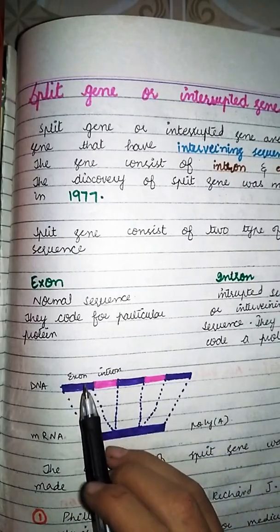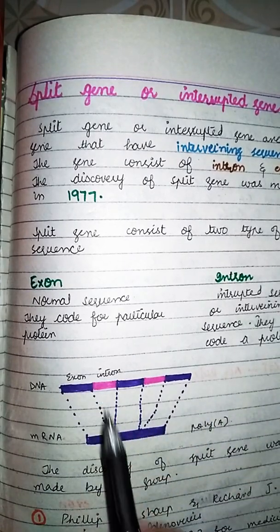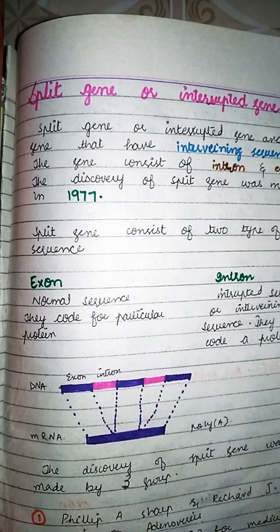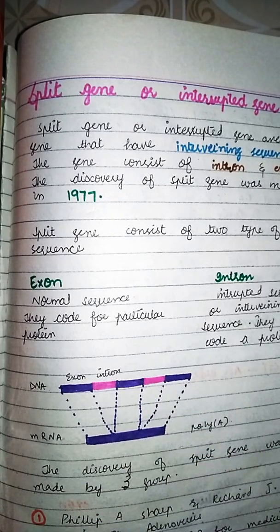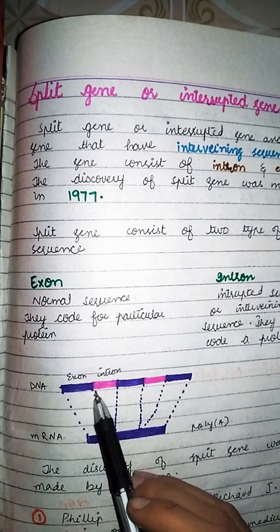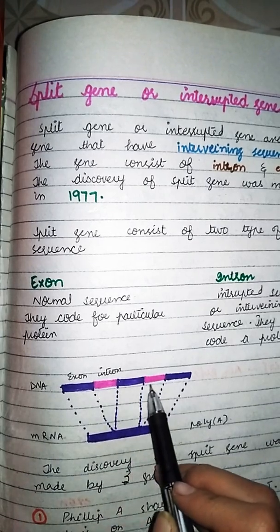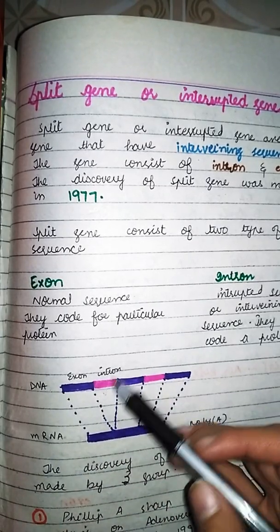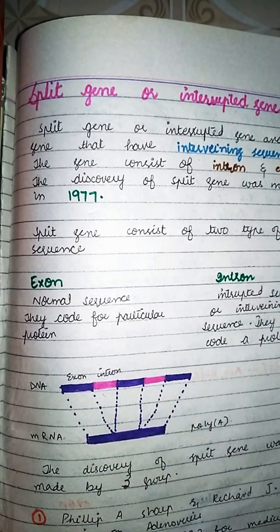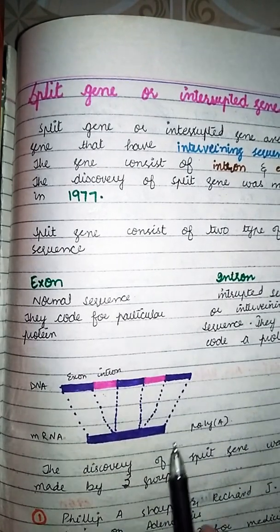اب diagram دیکھ لیں — یہ DNA ہے جس میں exon اور intron present ہیں۔ جب messenger RNA کی formation ہوتی ہے تو splicing کا process ہوتا ہے جس میں intron کو remove کر دیا جاتا ہے۔ یہ جو pinkish color کا دکھائی دے رہا ہے یہ intron ہے۔ Intron remove ہونے کے بعد exon سے messenger RNA بنتی ہے۔ اس site کو 5 prime اور اس site کو 3 prime کہتے ہیں۔